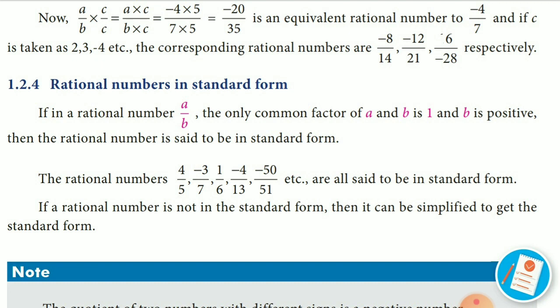For example, in our book, it is given 4 by 5. The common factor of 4 and 5 is 1. Minus 3 and 7, common factor 1. 1 and 6, common factor 1. 4 and 13, common factor 1. 50 by 51, common factor 1. So, in other words, it is said to be simplified form.